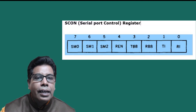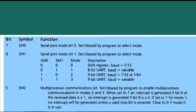The SCON register is an 8-bit register which controls the serial port. Bits 7 and 6 are for mode selection — there are four modes: 00 is Mode 0 (shift register mode), 01 is Mode 1 (standard UART mode), 10 is Mode 2 (multiprocessor mode), and 11 is Mode 3 (9-bit UART mode).